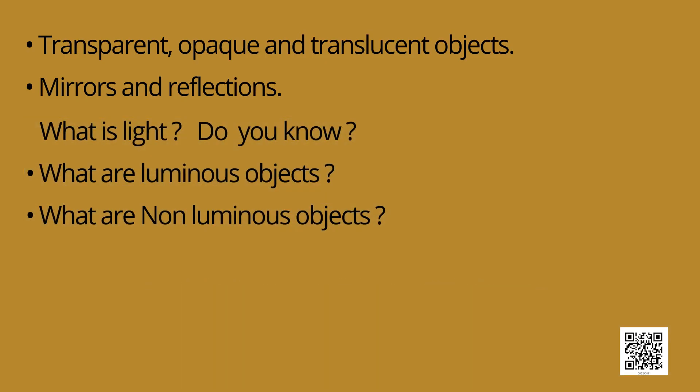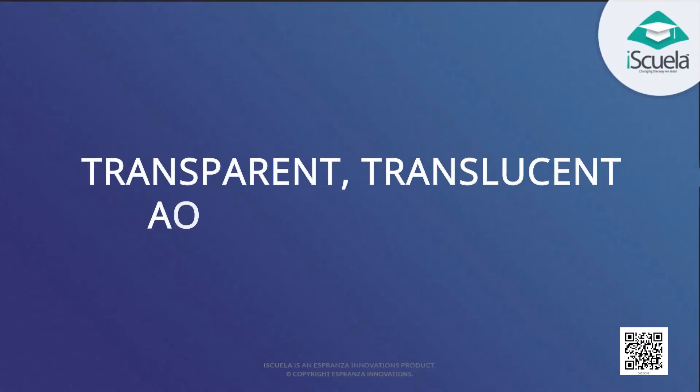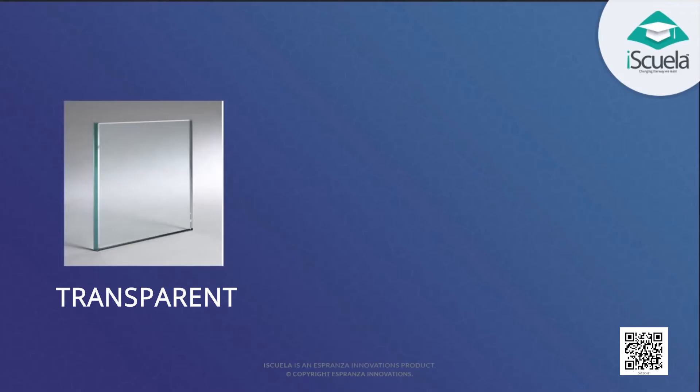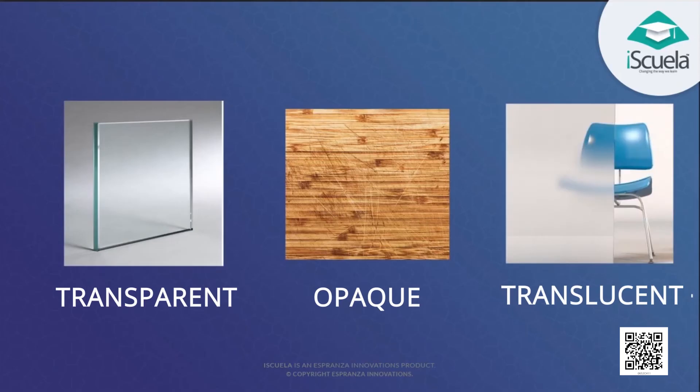Now let us understand about transparent, translucent and opaque objects. The objects around us are categorized into three categories on the basis whether they allow the light to pass through them completely, partially or do not allow the light to pass through them. The categories are transparent, translucent and opaque.